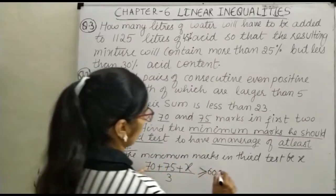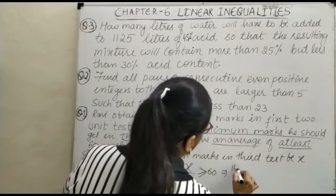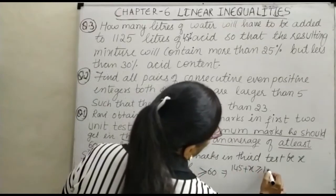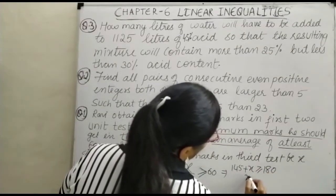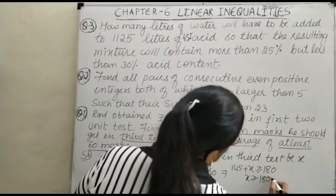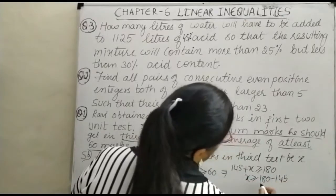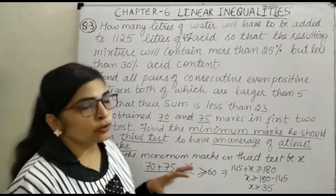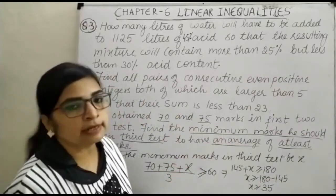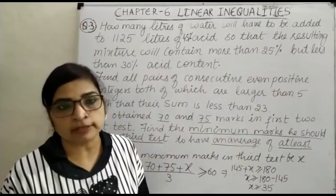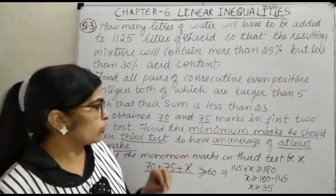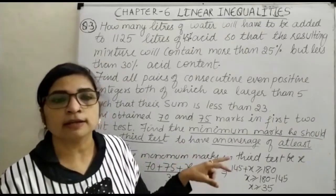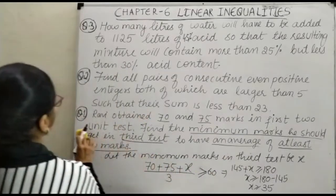So we can work out: 70 plus 75 plus X is greater than or equal to 180. That gives us X greater than or equal to 180 minus 145, which is X greater than or equal to 35. So he should get at least 35 marks — come se come 35 score karna zaroori hai. X is greater than or equal to 35.